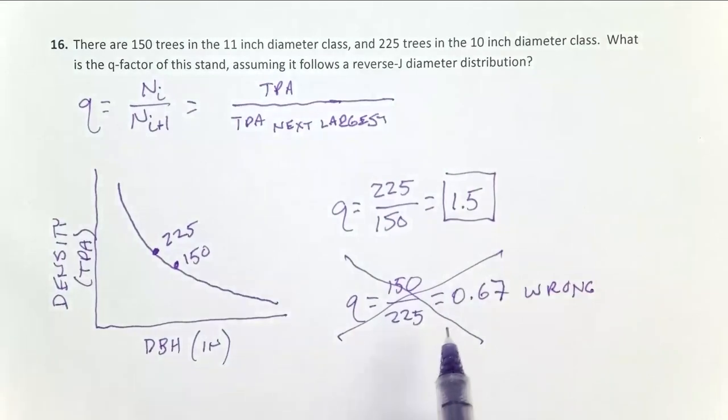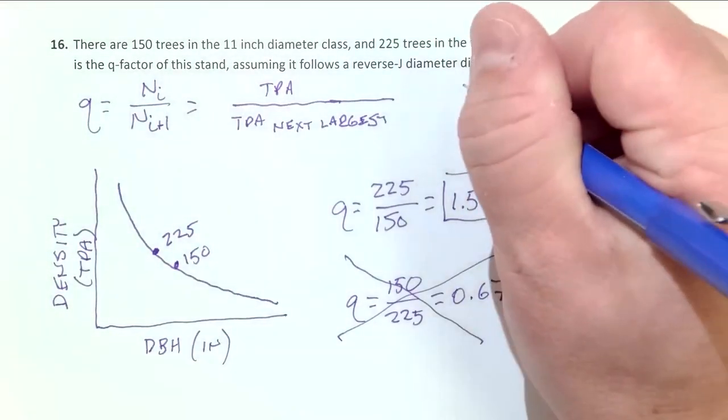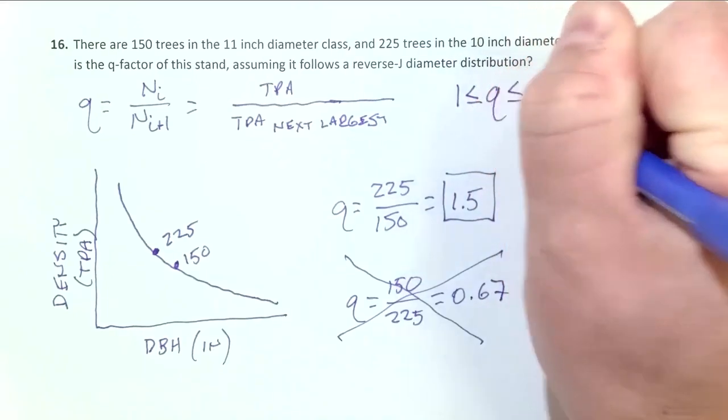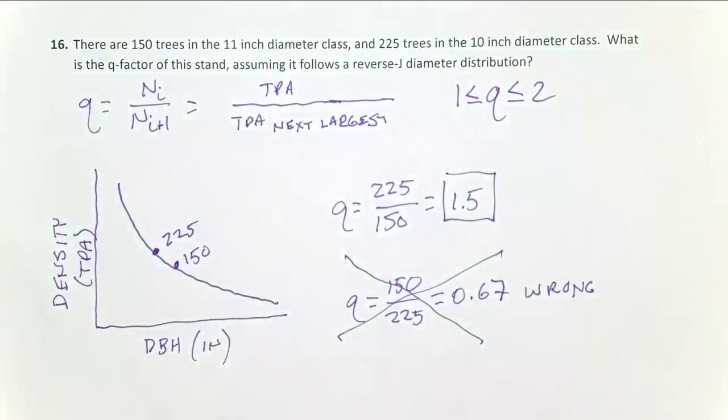So to avoid making this mistake, you simply check your data at the end of each time you do one of these problems, because Q falls between 1 and 2. So 0.67 was below 1. It's outside of the range you would expect Q to fall in. We know we did something wrong. Take a look at it. Look at your fraction. That's the most common error. Let's check our Q factor. We did arrive at 1.5. It's between 1 and 2. That's correct.